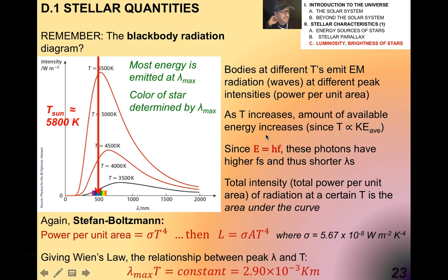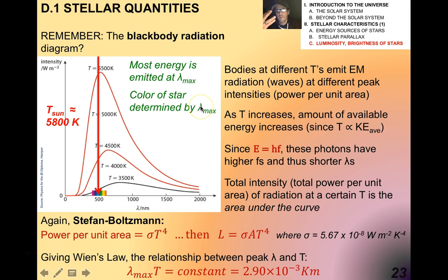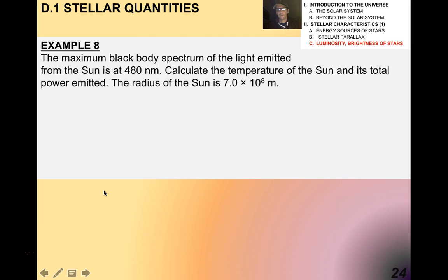A couple of other things about this diagram: here's the sun. Most energy is emitted at the maximum wavelength, and it turns out that the color of the star is also determined by the maximum wavelength — the color that we see it as. If we were to be a little more precise, we'd move this over to the yellowish part. That's why the sun appears generally yellowish to us.